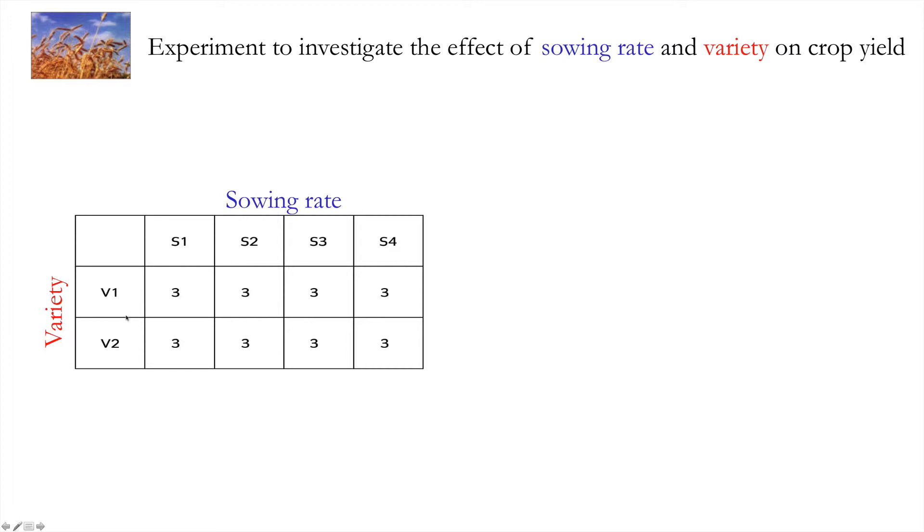Of course if we were interested in variety we might spend a lot of effort looking at just this sowing rate here or just this one here. Or if we were interested in sowing rate we might want to look at just one variety rather than both varieties. But in this case we can actually look at both the effect of variety on yield and also the sowing rate on the yield. And actually look at the interaction because it may well be that the effect of variety is important in that V1 gives a higher yield for example. But only at these sowing rates and not at those sowing rates.